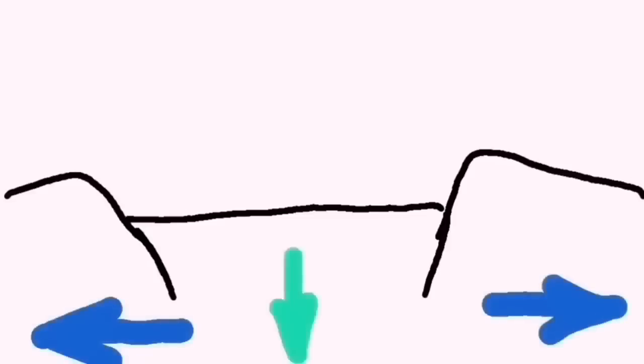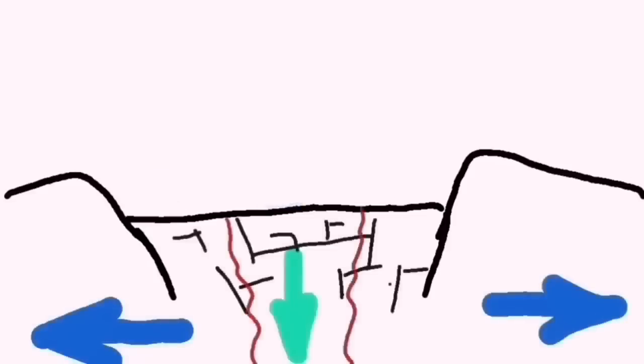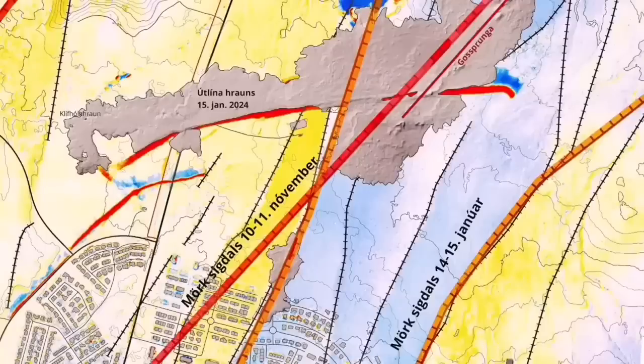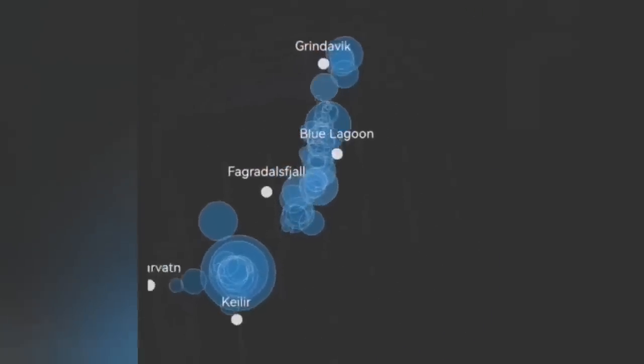And this diagram shows that movement ripping apart of the land causes downfall of a block of rock and that creates cracks. Through the cracks, magma can rise and melt and create lava. Now this is a different situation.